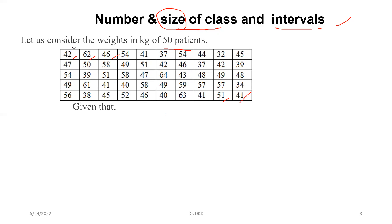So for example, see what are the givens. Number of patients, n is 50 in this data and the highest value of this weight is 64. If we see this table, 64 is the highest value and the lowest value is 32. So range, what would be the range interval of this data? We subtract highest value minus lowest value, 64 minus 32, which is 32.